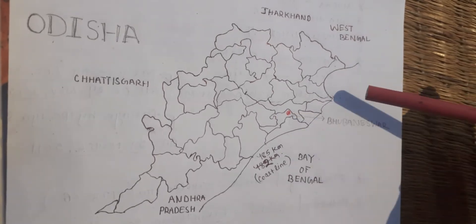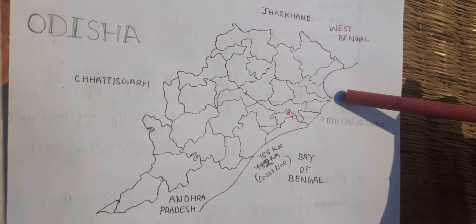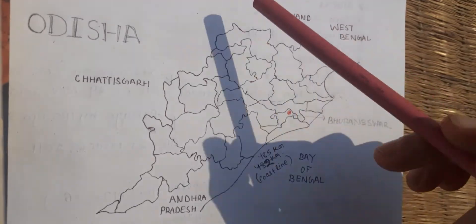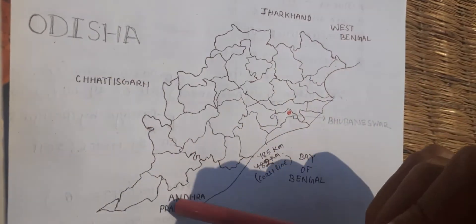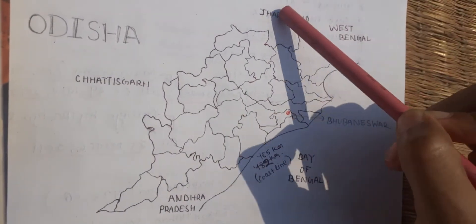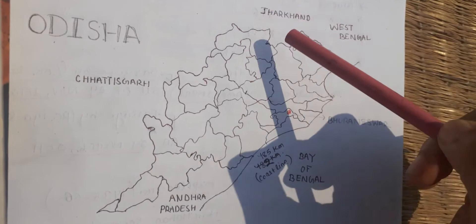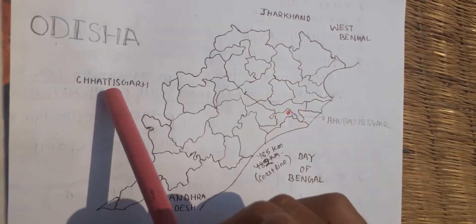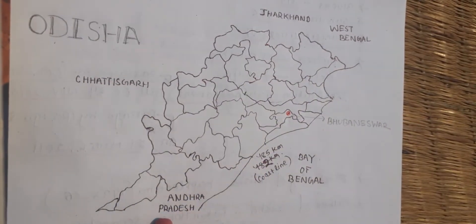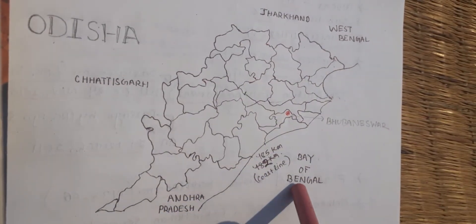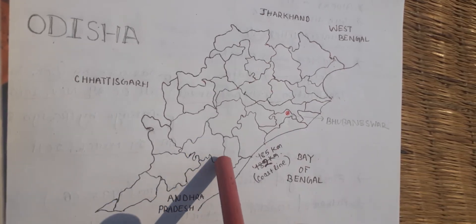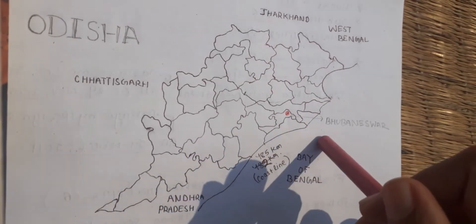Today we will talk about Odisha state. Here is the map of Odisha and these are the neighboring states. In the North East is West Bengal, in the North is Jharkhand, in the West is Chhattisgarh, in the South is Andhra Pradesh, and this is the Bay of Bengal. Odisha is situated at the coast of the Bay of Bengal.